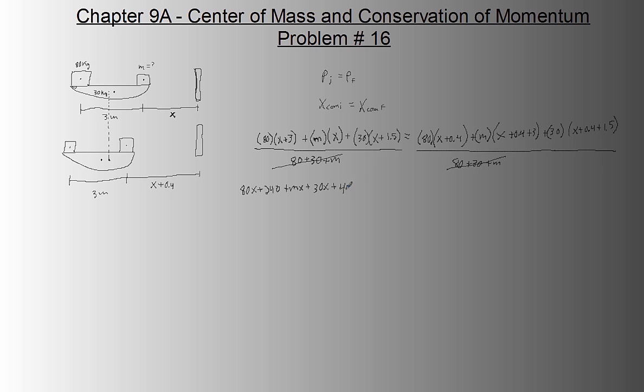Now, let's just distribute this out. So this is 80x plus 240 plus mx plus 30x plus 40, 30 times 1.5, 45 equals 80x plus 40 times 1.5. 80 times 0.4 is 32, plus mx plus 0.4x plus 3m. Oh, this should be m here.